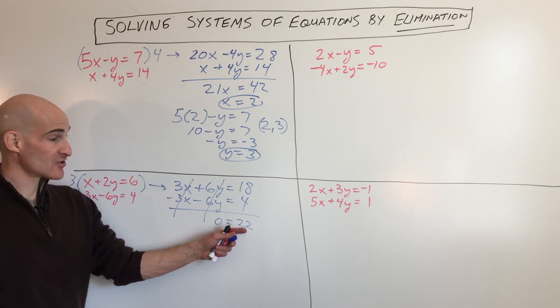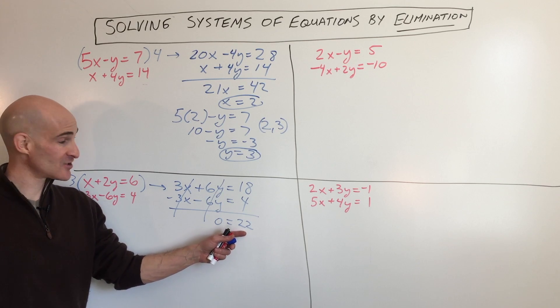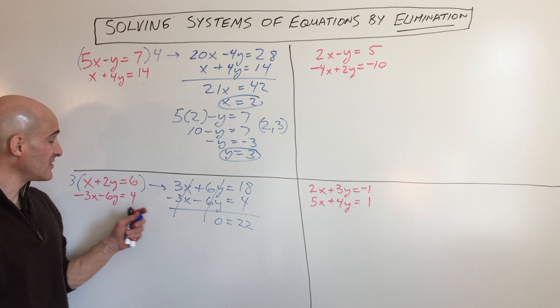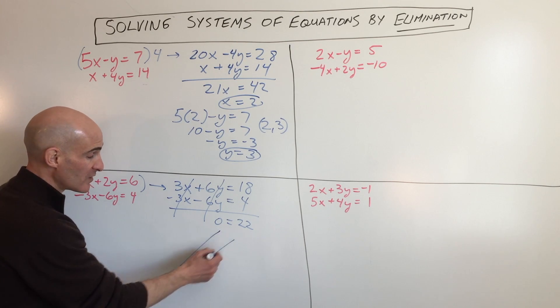Now what does that mean, 0 equals 22? That's nonsense, right? That's a nonsensical answer. It doesn't make any sense. And what that actually tells us is that these two lines are parallel. So if you were to graph them, they would be like this.